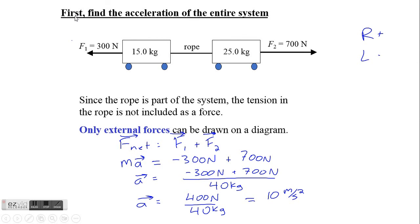We first need to find the acceleration of the entire system. We can look at this and say 700 newtons to the right, 300 to the left — it's going to move to the right. When we draw the force diagram, the rope is part of the system and the tension in the rope is not included as a force because it is not an external force. So in this case the net force is F1 plus F2.